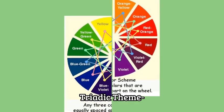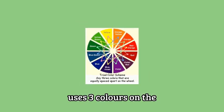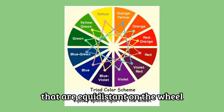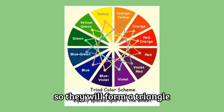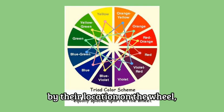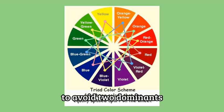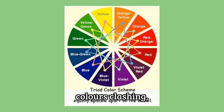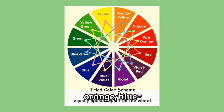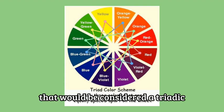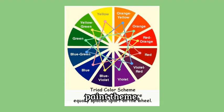The triadic theme uses three colors on the color wheel that are equidistant on the wheel, so they will form a triangle by their location on the wheel. A dominant color and a subtle color must be identified to avoid two dominant colors clashing. If the intermediate colors of yellow-orange, blue-green and red-violet were used, that would be considered a triadic paint theme.